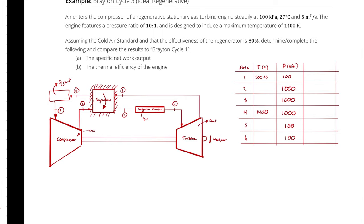This approach is due to the cold air standard assumption. If I wasn't using the cold air standard, I would have to look up PR1 and use PR2 over PR1 equals P2 over P1 — the isentropic ideal gas equation without constant specific heats — then use PR2 in the tables to look up enthalpy at state 2. Similarly, I would look up PR4, use PR4 over PR5 equals P4 over P5, and find enthalpy at state 5. Then I'd set up an energy balance on the regenerator and use the effectiveness to find H6 and H3, giving all enthalpies needed for work and heat calculations.